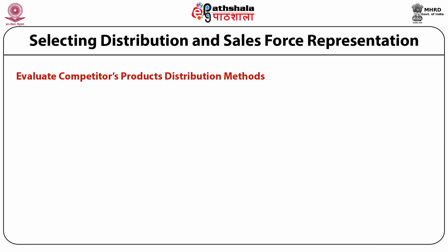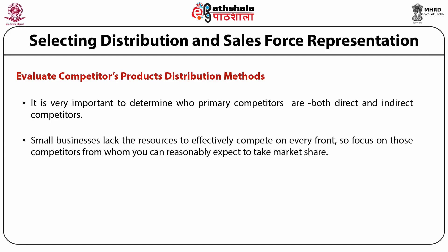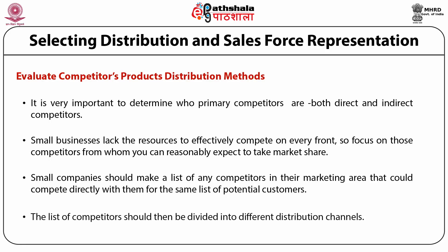When evaluating your competitors' products' distribution methods, it is important to determine who your primary competitors are — both direct and indirect. Small businesses lack the resources to effectively compete on every front, so focus on those competitors from whom you can reasonably expect to take market share. Small companies should make a list of any competitors in their marketing area that could compete directly with them for the same potential customers. This list should then be divided into different distribution channels.